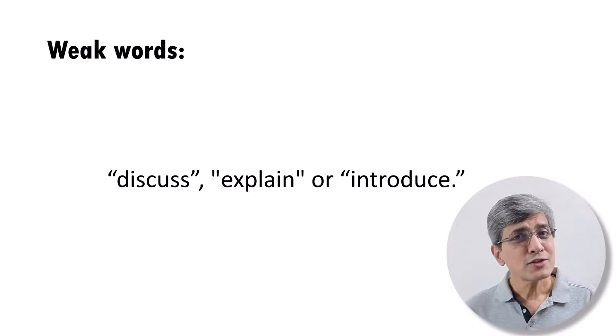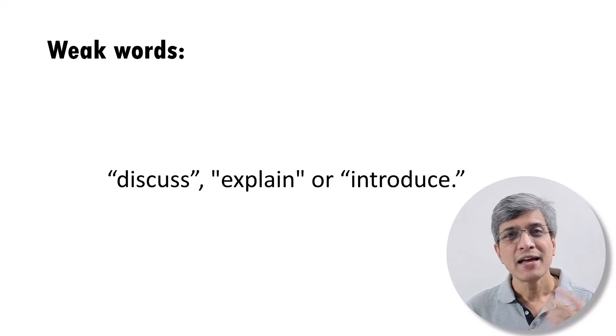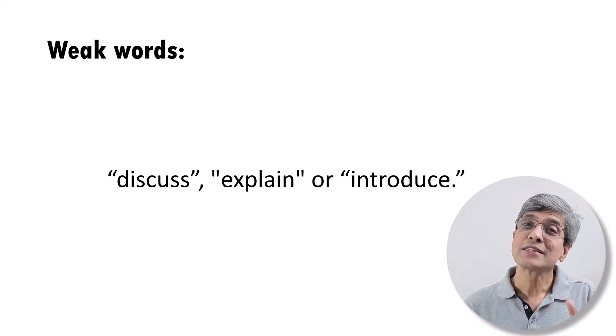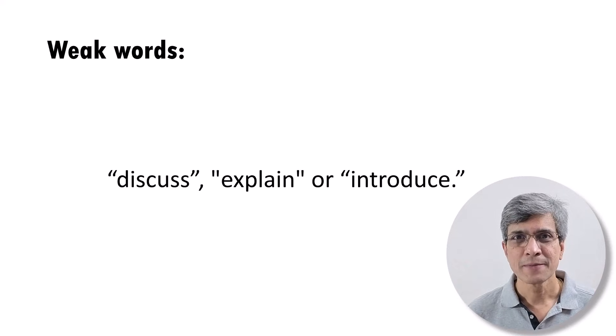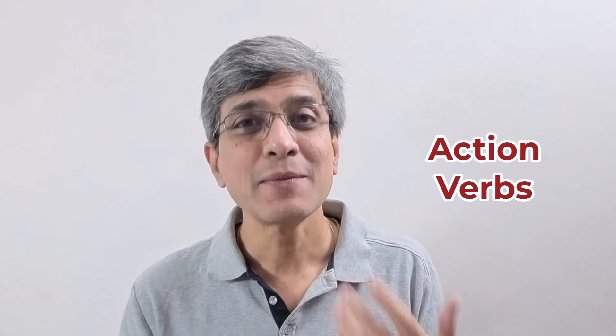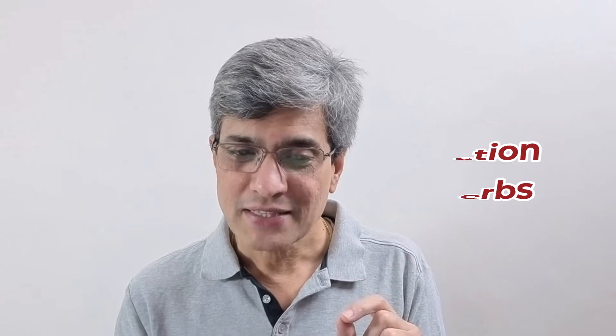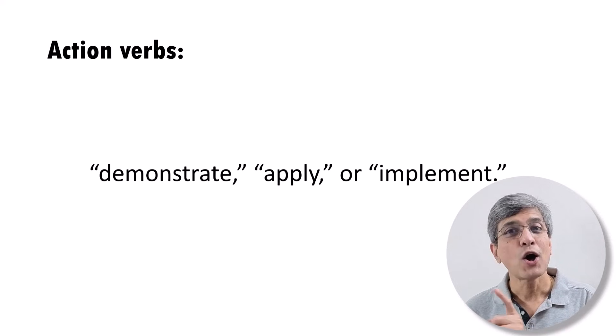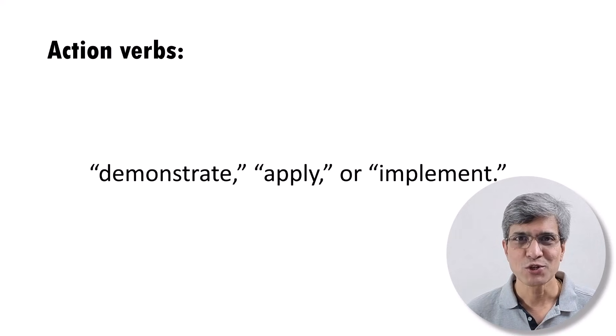If you observed closely, in all the examples I showed you, I used a small but very interesting technique to improve the effectiveness of my objectives. The technique is: instead of using weak words like discuss, explain, or introduce, I used something called action verbs. Action verbs, as the name suggests, imply action. For example, I used words like demonstrate, apply, or implement to write my presentation objectives. When I use action verbs like this, my presentation objective automatically becomes sharper.